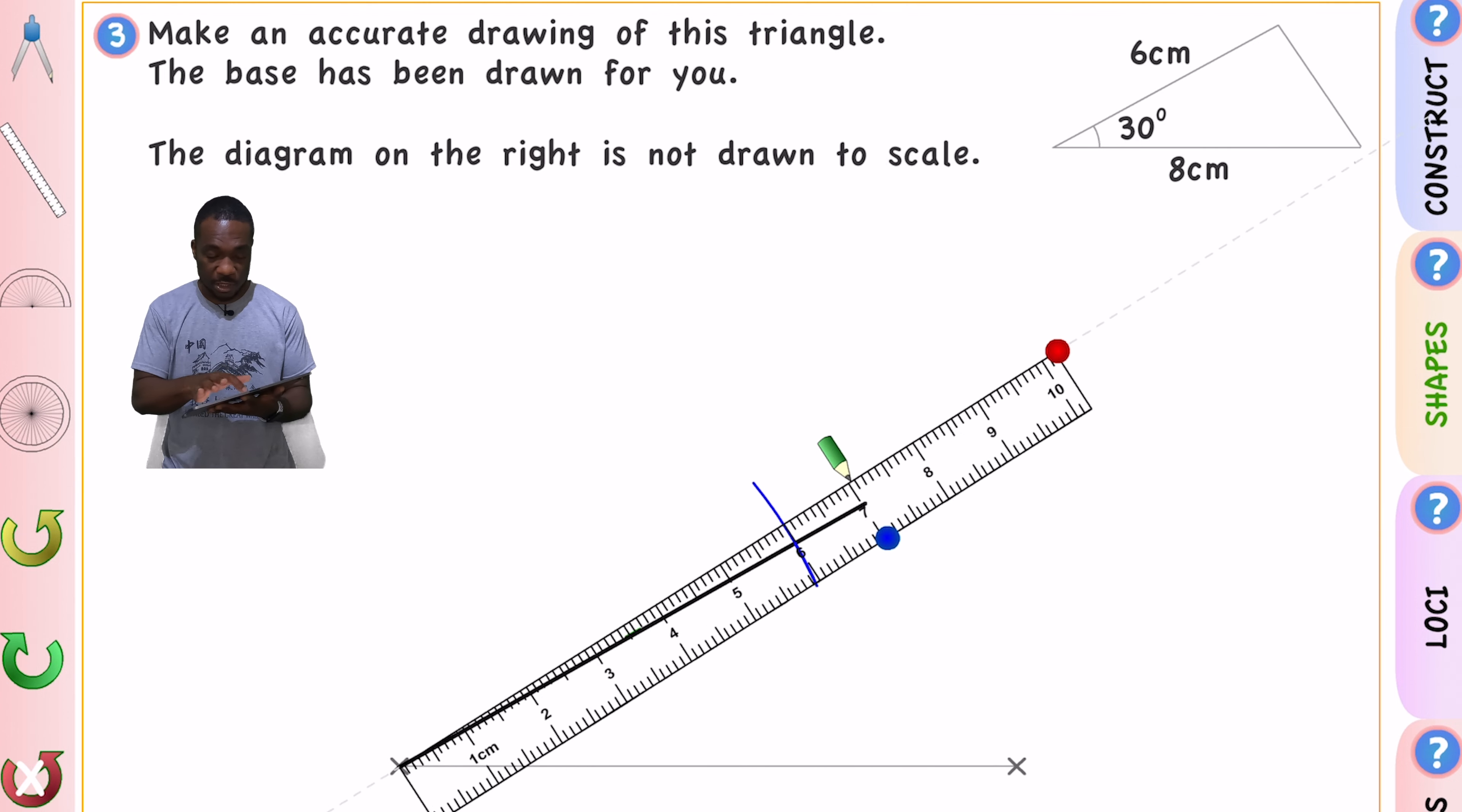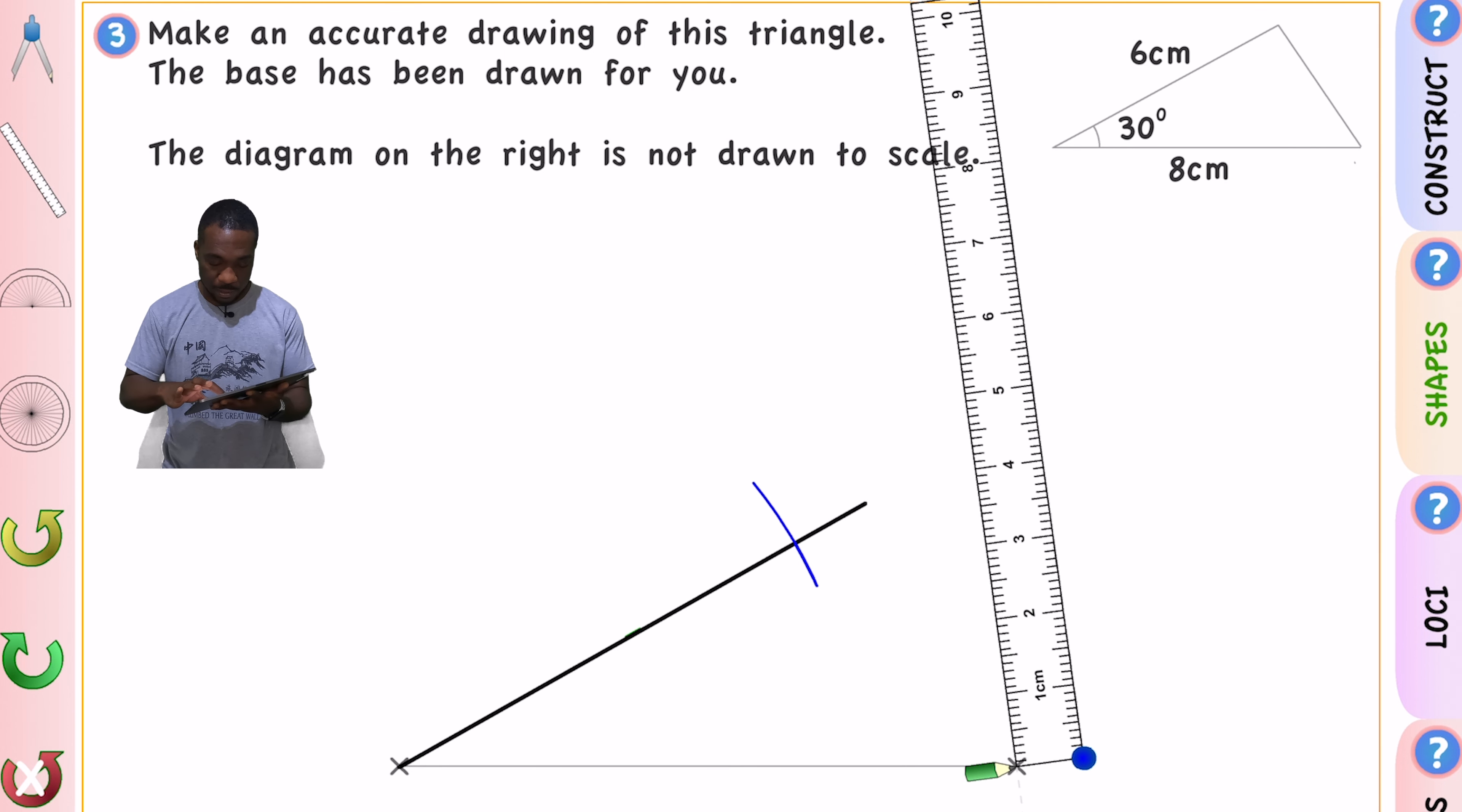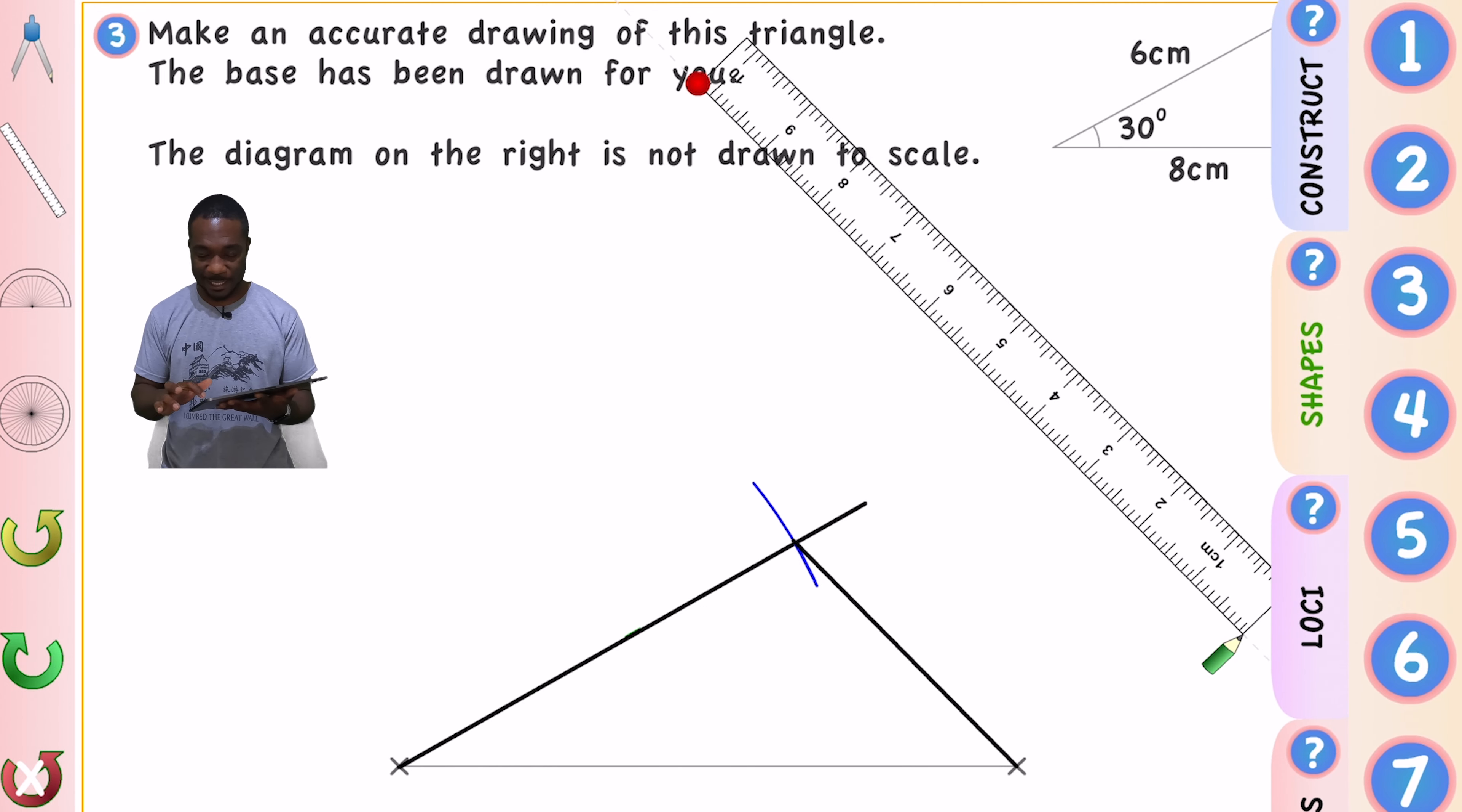Now I just need to take my ruler and go to the other end of that line right there. Make sure it's really super precise. Go to that point where the line and the curve meet and boom. There is my triangle. Done. Let's go to the last question for today then.